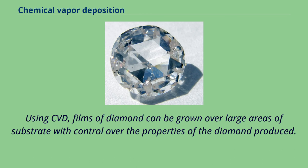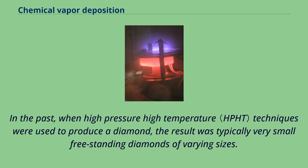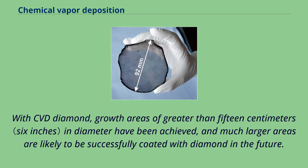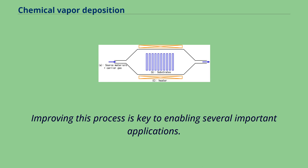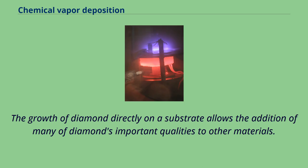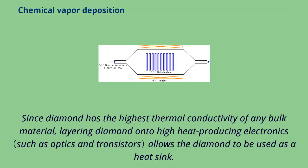In the past, when high pressure high temperature techniques were used to produce a diamond, the result was typically very small freestanding diamonds of varying sizes. With CVD diamond, growth areas of greater than 15 cm in diameter have been achieved, and much larger areas are likely to be successfully coated with diamond in the future. Improving this process is key to enabling several important applications. The growth of diamond directly on a substrate allows the addition of many of diamond's important qualities to other materials. Since diamond has the highest thermal conductivity of any bulk material, layering diamond onto high heat producing electronics allows the diamond to be used as a heat sink. Diamond films are being grown on valve rings, cutting tools, and other objects that benefit from diamond's hardness and exceedingly low wear rate.